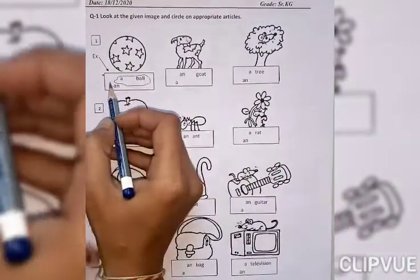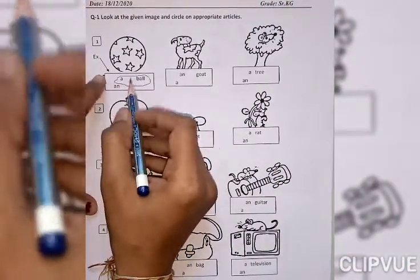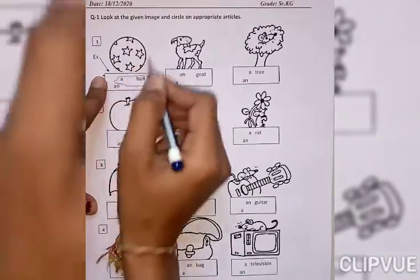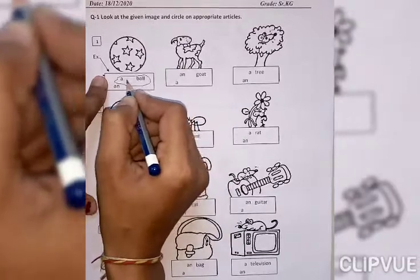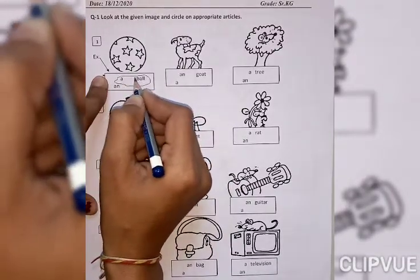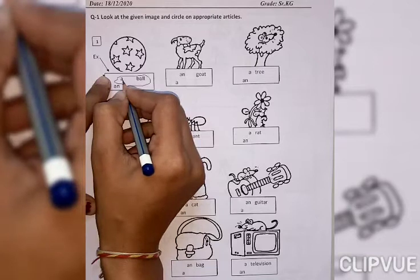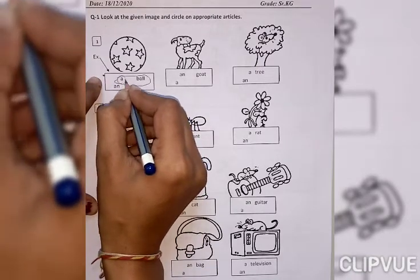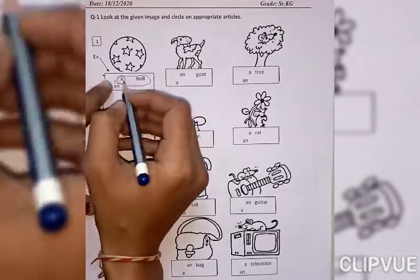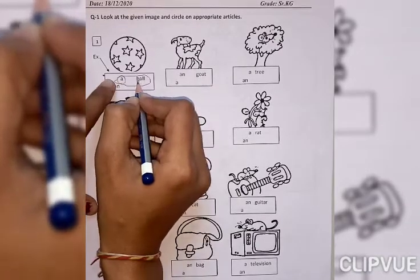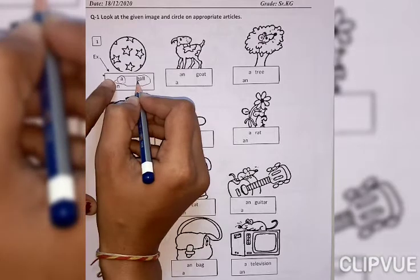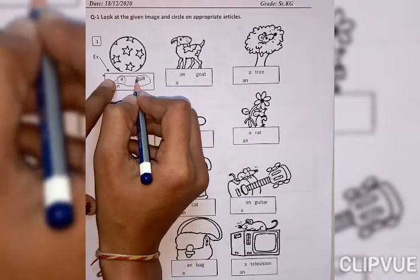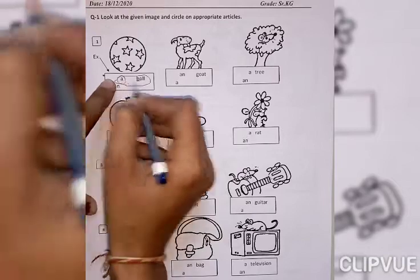Look at here everyone. I give already one example here. This one is ball. Which article will come in front of ball? A. A ball, because this one is consonant. B is consonant, it has a consonant sound. That's why A will become here.